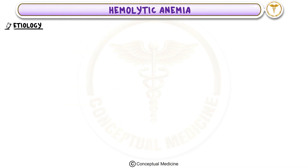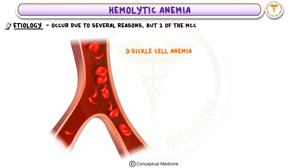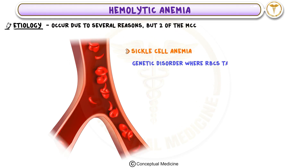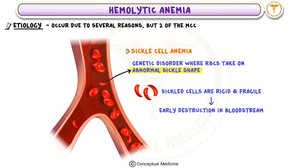Etiology: Hemolytic anemia can occur due to several reasons, but two of the most common causes are: 1. Sickle Cell Anemia — a genetic disorder where RBCs take on an abnormal sickle shape. These sickled cells are rigid and fragile, leading to early destruction in the bloodstream.